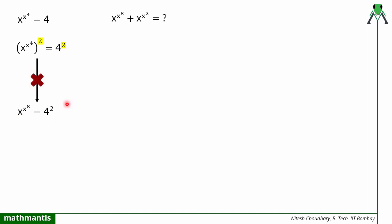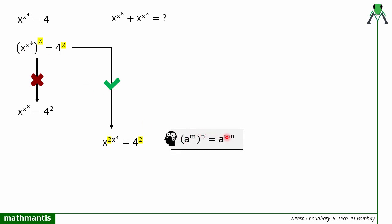Remember, this is not the correct way because the power 4 will not multiply with power 2 like that. The correct way is that the power 2 will multiply with x raised to power 4, because that is the property — power raised to power gets multiplied. But the complete power here is x raised to power 4, not just 4. So x raised to power 4 will get multiplied by 2, giving a different value — you are not going to get x raised to power 8 that way.